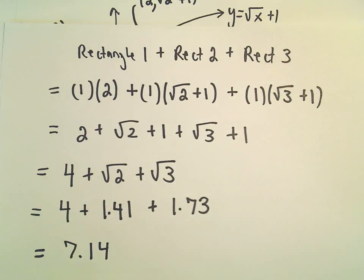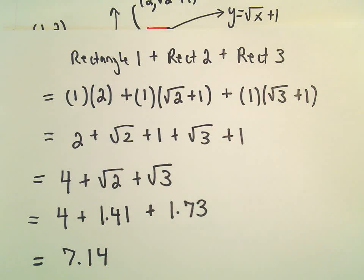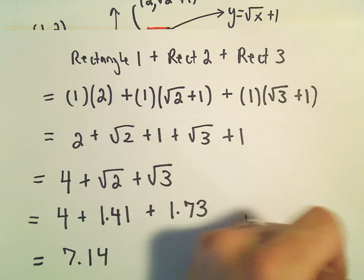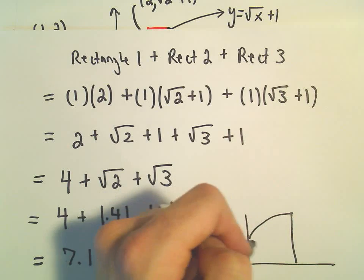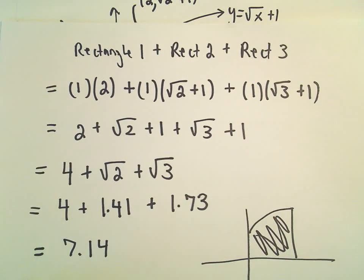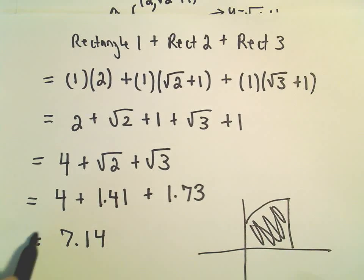That would be our approximation to the original area. We would like to know it exactly, we would like to have known that area exactly, but instead, we're just approximating it.